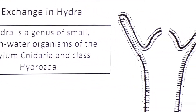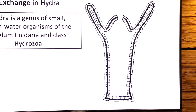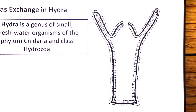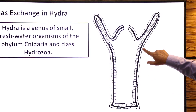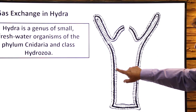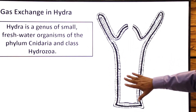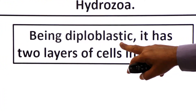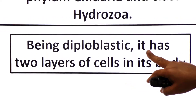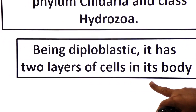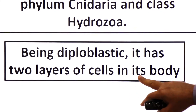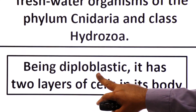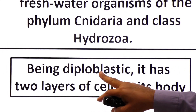Its body is simple. Here you can see the body of Hydra — it is simple, multicellular, and has diploblastic organization. It has two layers of cells in its body wall: the outer layer is the ectoderm and the inner layer is the endoderm.